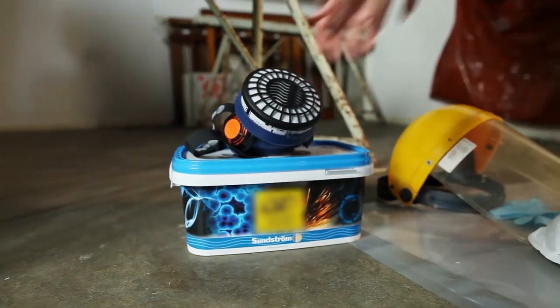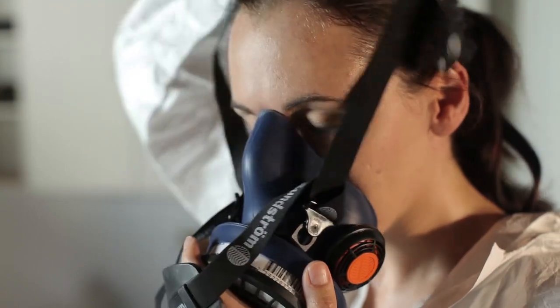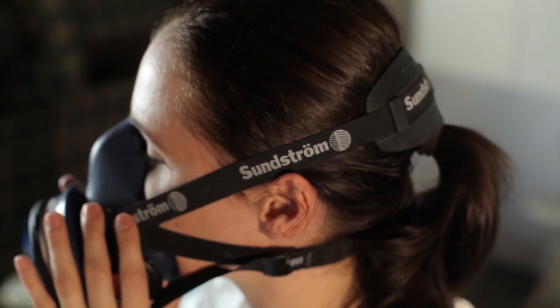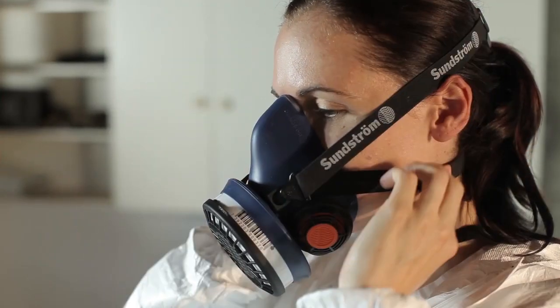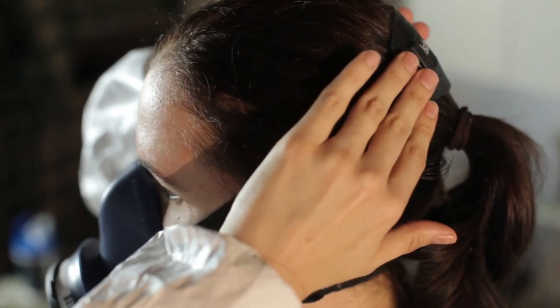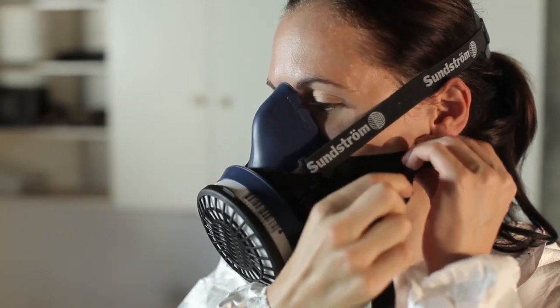To put on a reusable respirator, loosen the straps. Place the respirator over your mouth and nose. Place the bottom strap behind your head, ensuring long hair is moved from under it. Pull the top strap over your head, making sure the head harness is on the top of your head. Tighten the straps and check the fit, so it fits securely to your face.